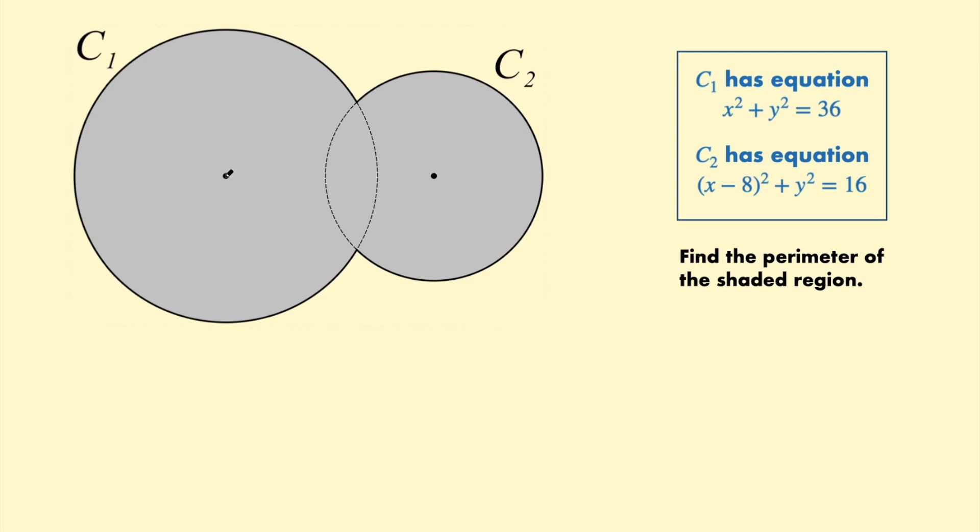So if we draw in some lines here from the center to where the circles intersect. In order to find this arc length we'll need this angle in here and similarly for the small circle if we draw in those two lines to where they intersect we'll need this angle as well. To find that larger angle what I want to do is find this smaller angle in here and to find that angle I'm actually going to create a smaller triangle. So if I draw a line between the centers of the circles I create a triangle in here.